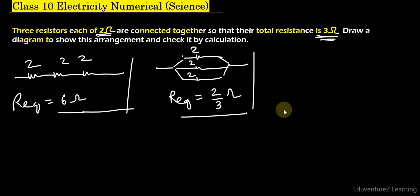So the better option is to connect two in parallel and one in series. You can also check for two in series and one in parallel, but I think the better option is to connect two in parallel and one in series: 2 ohm, 2 ohm, 2 ohm. Now we will calculate the equivalent resistance.